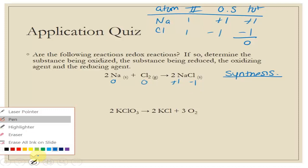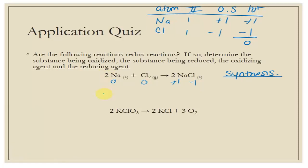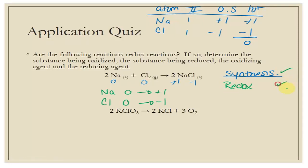Na goes from zero on the left to plus one on the right. Chlorine goes from zero to minus one. There is a change in oxidation number here, so this is a redox reaction. If we were to fully characterize this, it would be synthesis and redox.